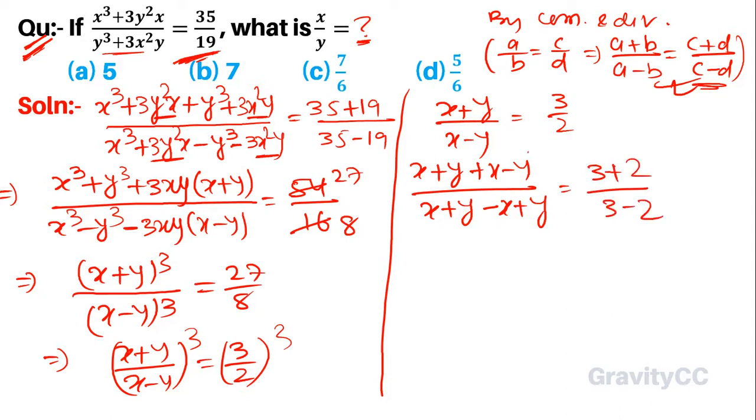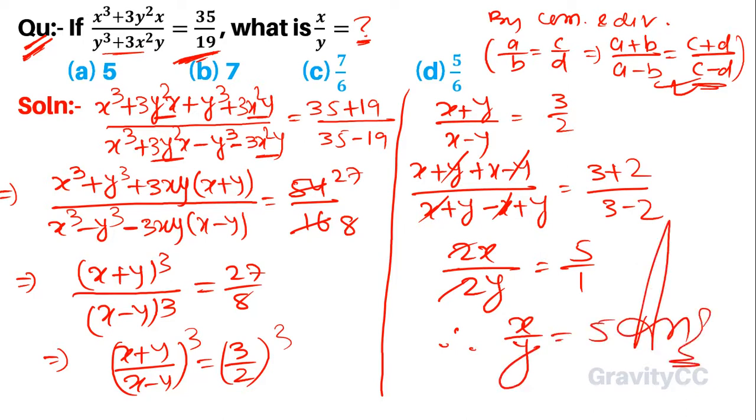The y's cancel, the x's cancel, so 2x over 2y equals 5 over 1. The 2's cancel, so therefore x over y equals 5. Option A is the correct answer.